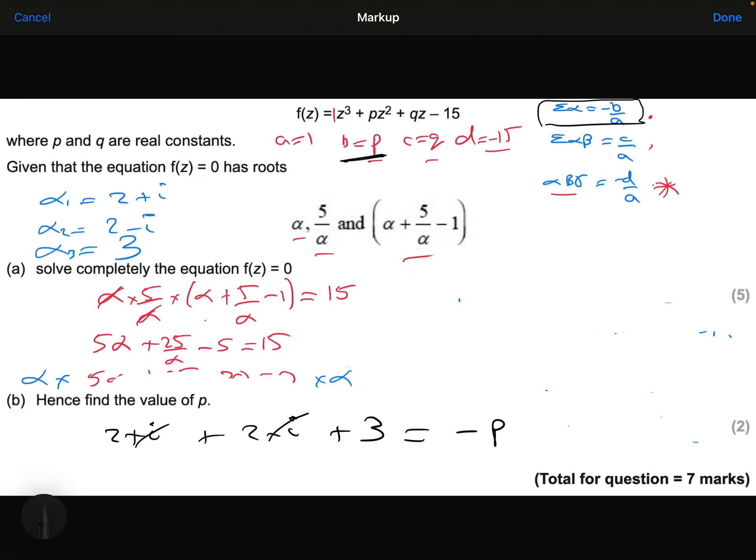When I add these together, the i's cancel out, and I get 7. So therefore, P is going to equal negative 7.